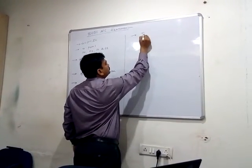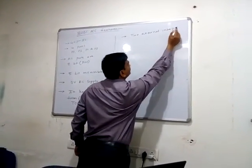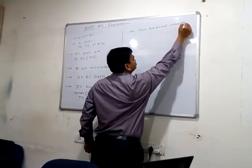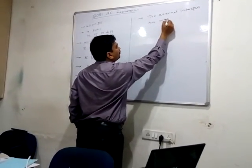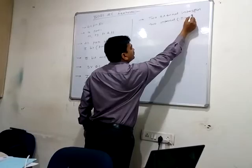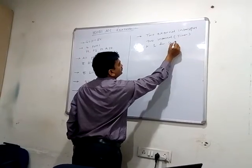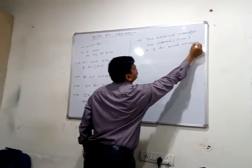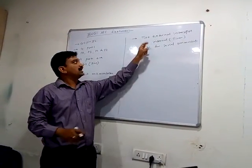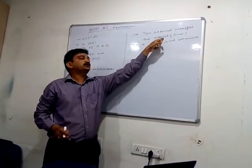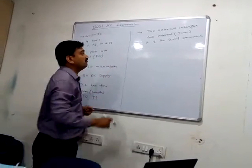The 8051 has 2 external interrupts and 2 internal interrupts — which are the timer interrupts — and 1 interrupt for serial communication. So in total there are 5 interrupts: 2 external hardware interrupts, 2 internal timer interrupts, and 1 for serial communication.